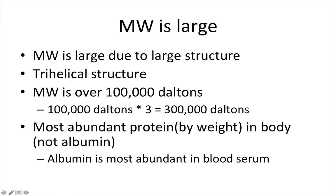The molecular weight of collagen is very large, mostly due to its structure — it has a trihelical structure. You'll see different numbers for the actual weight in Daltons: sometimes 100,000 and sometimes 300,000. If it's 300,000, they're talking about the trihelical structure; if it's 100,000, they're referring to the monomer subunit.